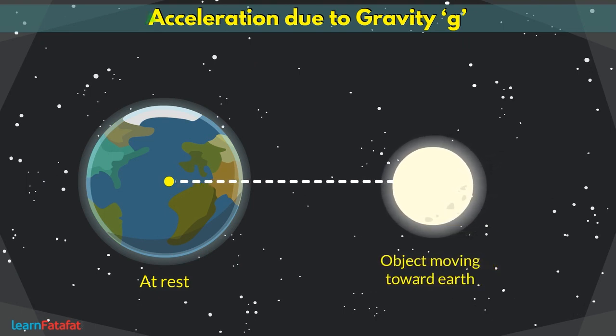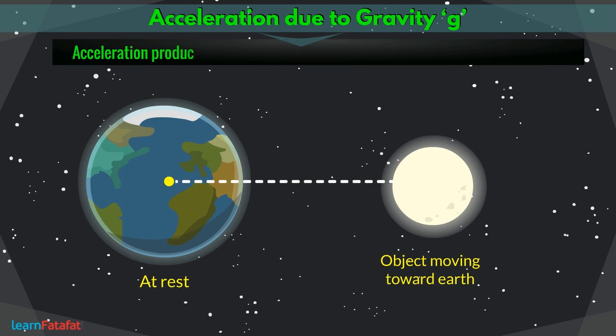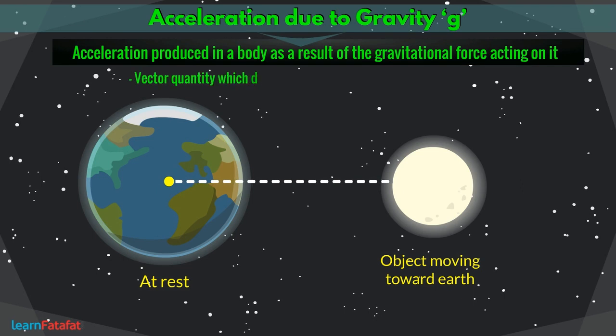It is acceleration due to gravity, denoted by g. It is defined as the acceleration produced in a body as a result of gravitational force acting on it. It is also a vector quantity, which directs towards the center of mass of the body.